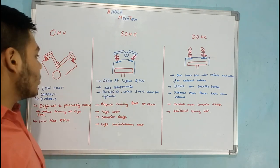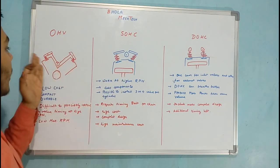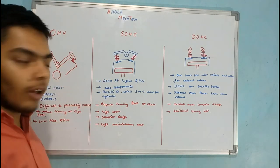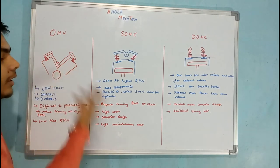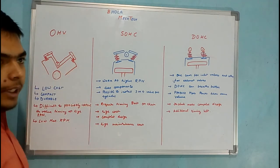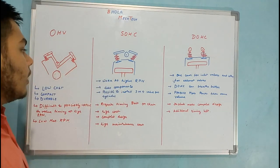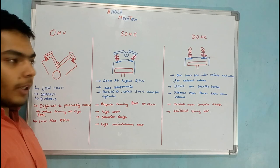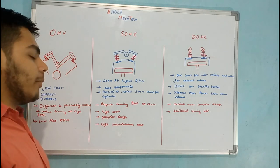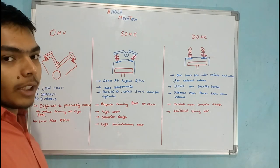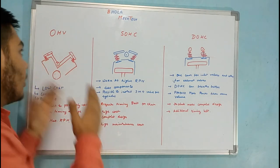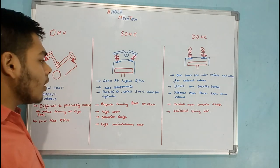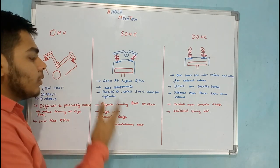SOHC can work at higher RPMs because there are much fewer components. The main part creating a large amount of inertia — the push rod — has been eliminated. This reduces the components and hence it can work at a higher RPM, which is a major advantage over OHV.